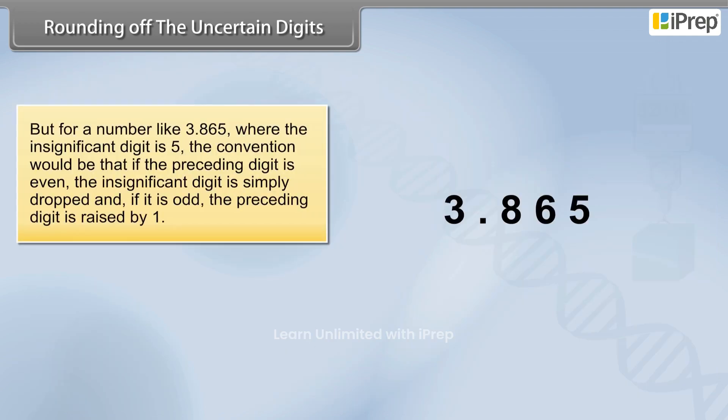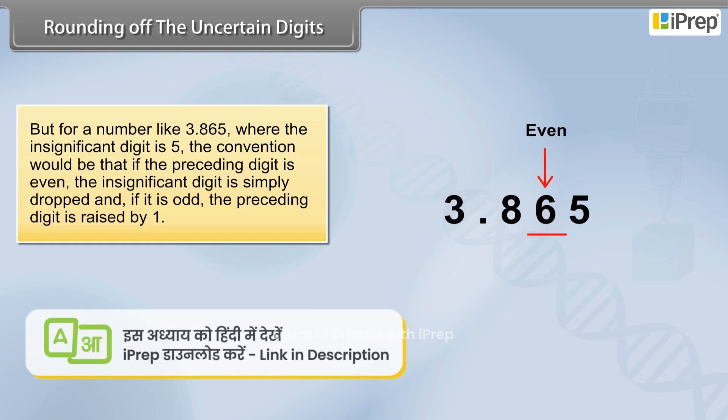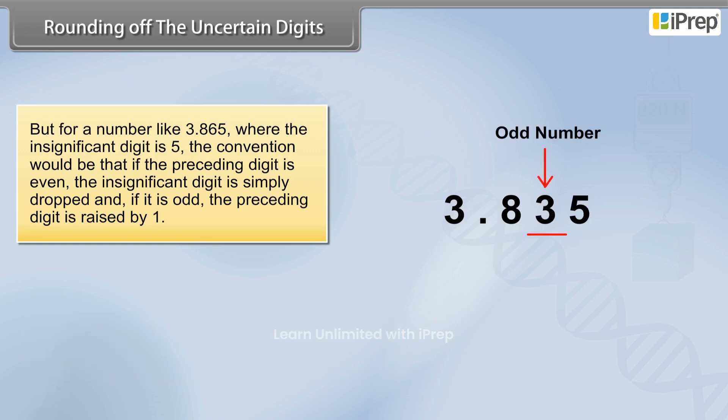But for a number like 3.865 where the insignificant digit is 5, the convention would be that if the preceding digit is even, the insignificant digit is simply dropped, and if it is odd, the preceding digit is raised by 1.